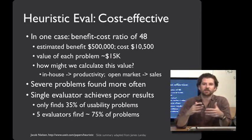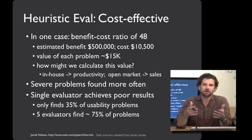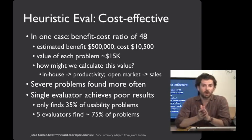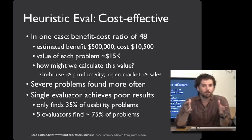One thing we can get from that graph is that evaluators are more likely to find severe problems, and that's good news. With a relatively small number of people, you're pretty likely to stumble across the most important stuff. However, even the best single evaluator found only about a third of the problems in the system. That's why ganging up a number of evaluators — say five — is going to get you most of the benefit that you'll be able to achieve.